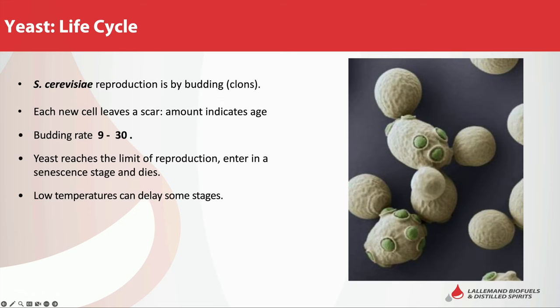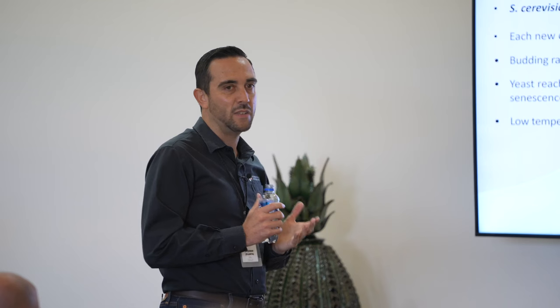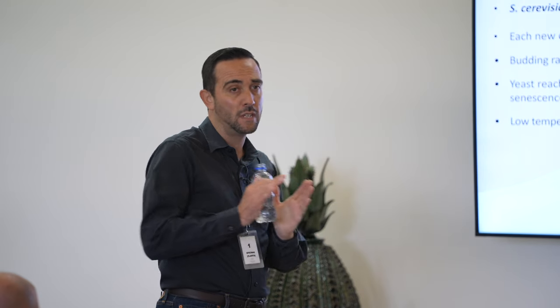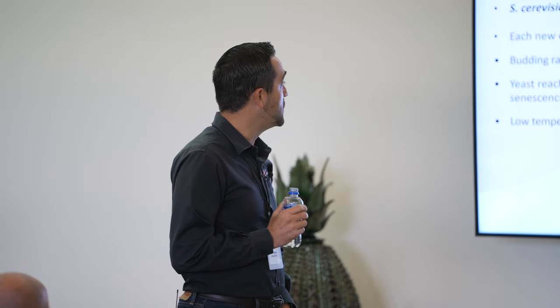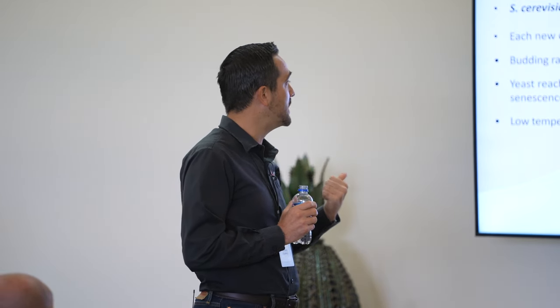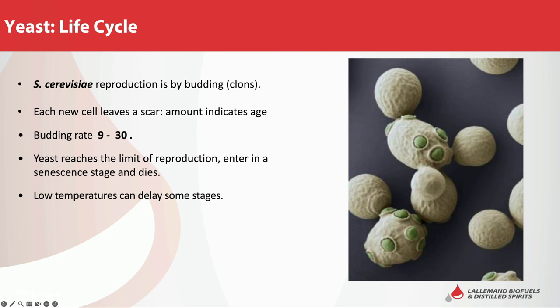Life cycle: Saccharomyces cerevisiae reproduces by budding — so it produces clones. Each new cell leaves a scar visible under microscopy. The budding rate is between 9 to 30, depending on whether we are in fermentation or in respiration using oxygen. The yeast reaches a limit of reproduction, enters senescence, and then dies. Low temperatures can delay some stages but can also give a different congener profile in your spirit — so it's very important to know the temperature during fermentation.